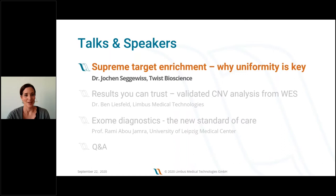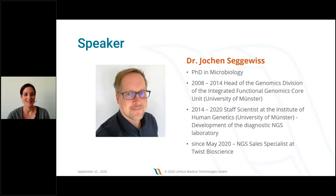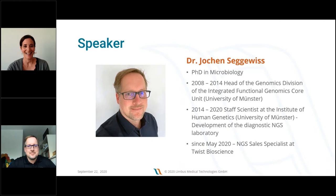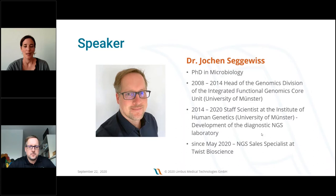I'm happy to introduce Dr. Jochen Segevis from Twist Bioscience with a talk about supreme target enrichment and why uniformity is key. He did a PhD in microbiology, and from 2008 to 2014 was the head of the genomics division of the Integrated Functional Genomics Core Unit at the University of Münster. He then moved to the Institute of Human Genetics, where he was responsible for developing the diagnostic NGS laboratory, also at the University of Münster. Since May this year, he has been working at Twist Bioscience as an NGS sales specialist supporting the sales team.